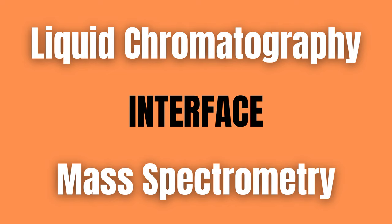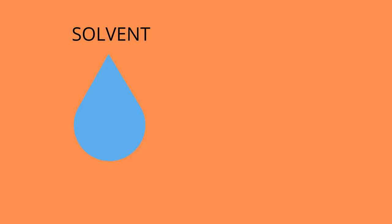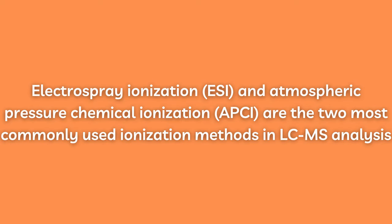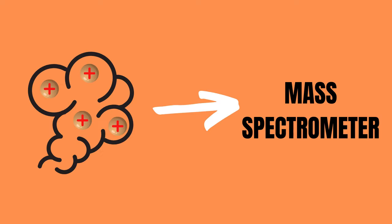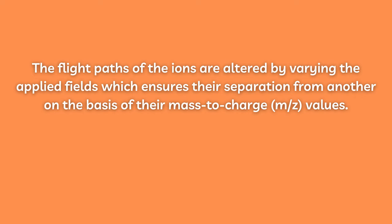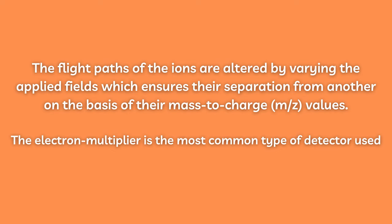The LC and the MS are coupled through an interface. The solvent is evaporated through the application of heat and analyte molecules are vaporized and ionized. This is crucial because the MS can only measure gas phase ions. Electrospray ionization ESI and atmospheric pressure chemical ionization APCI are the two most commonly used ionization methods in LC-MS analysis. Then the analyte ions are drawn into the mass spectrometer where they are subjected to electric fields and or magnetic fields. The flight paths of the ions are altered by varying the applied fields, which ensures their separation on the basis of their mass to charge, or m/z, values. Post separation, the ions can be collected and detected by a variety of mass detectors, the most common one being the electron multiplier.